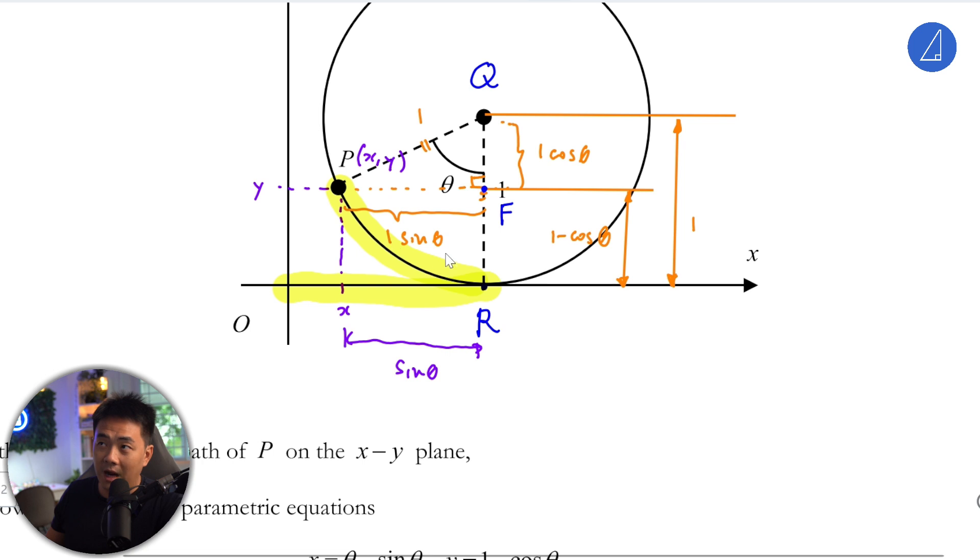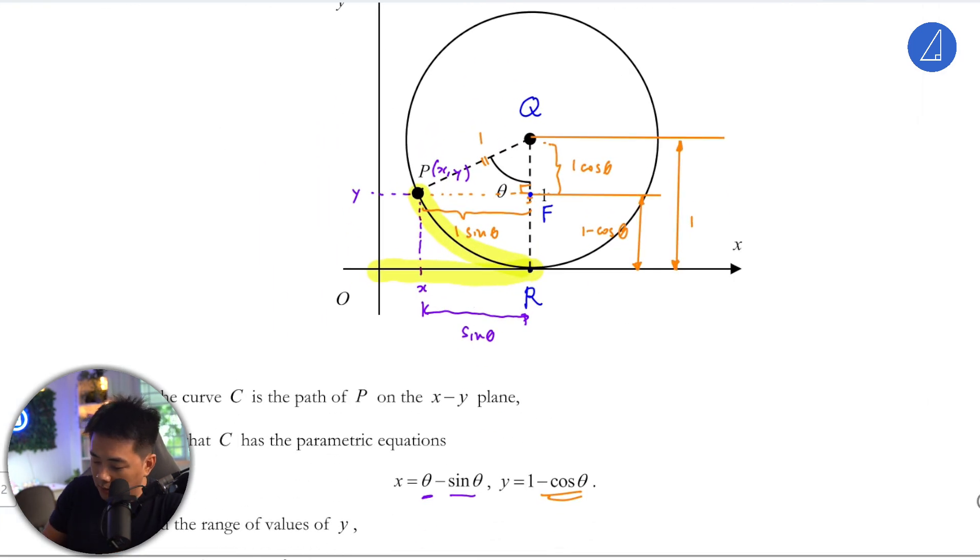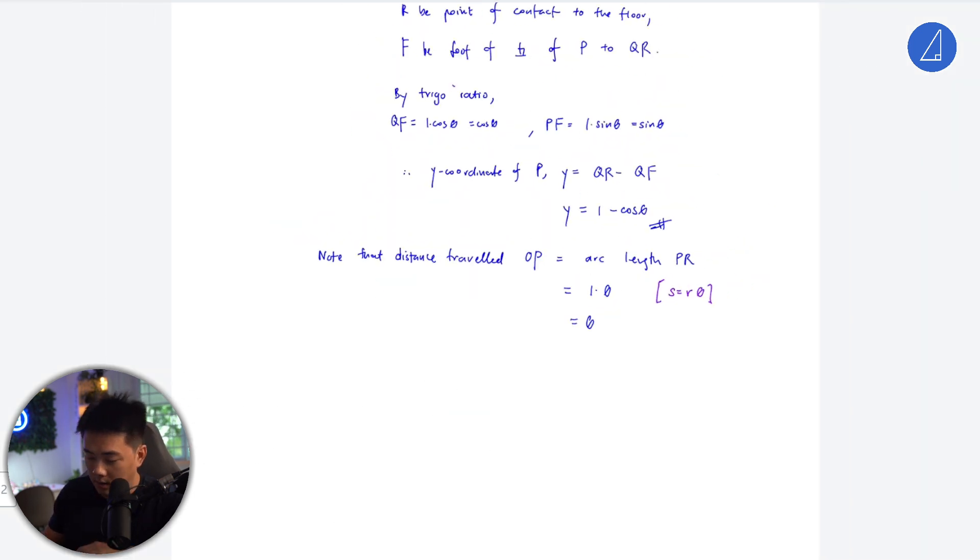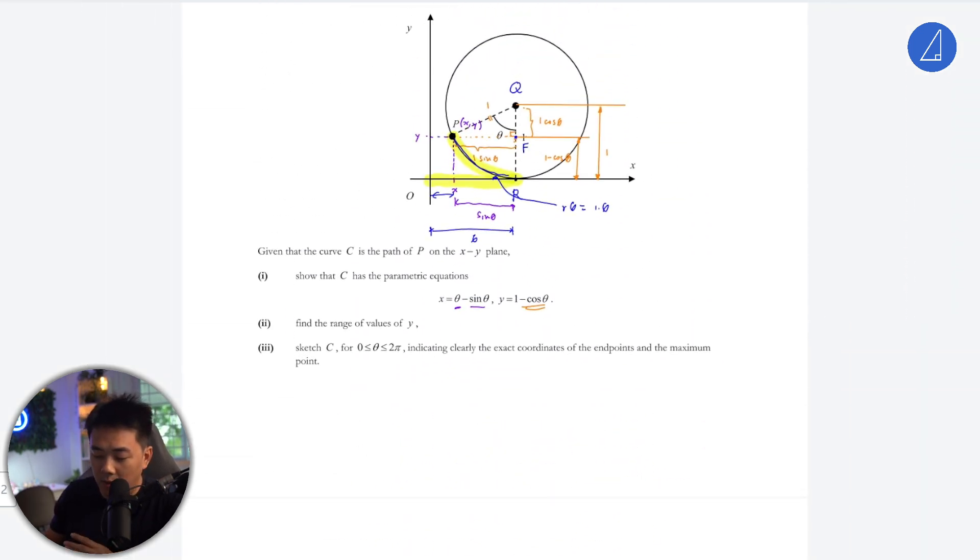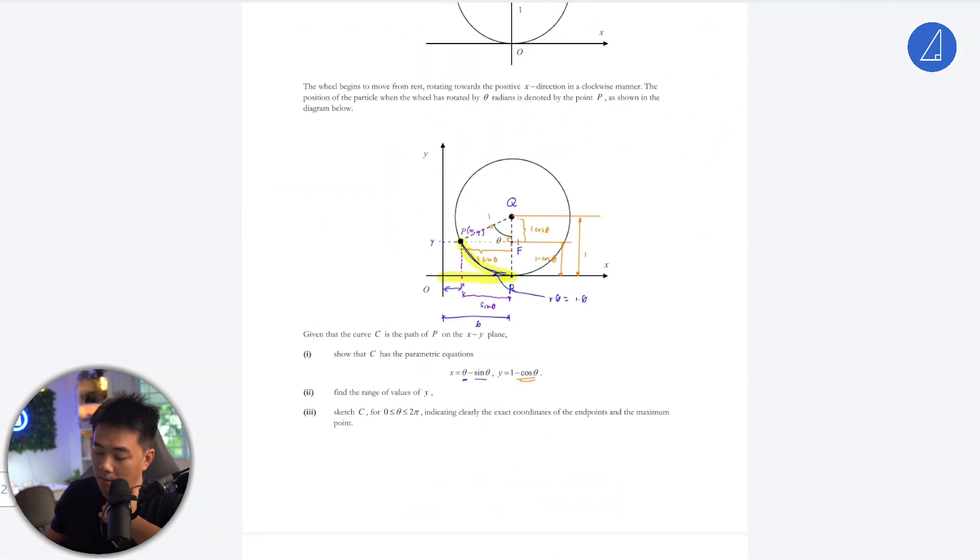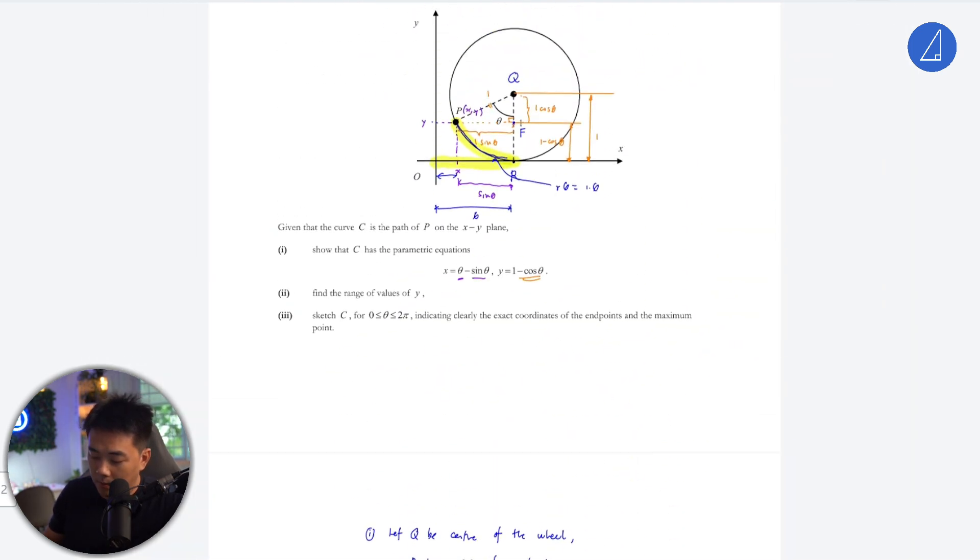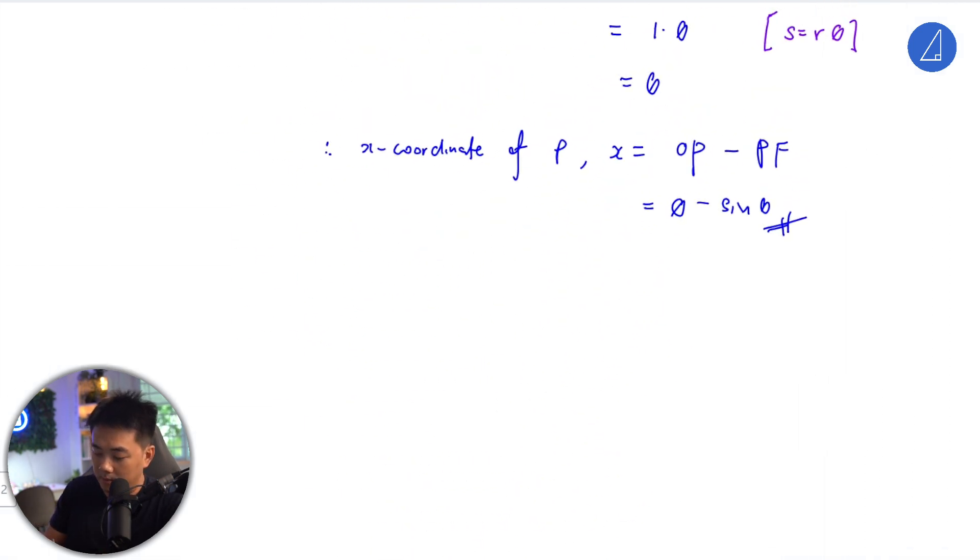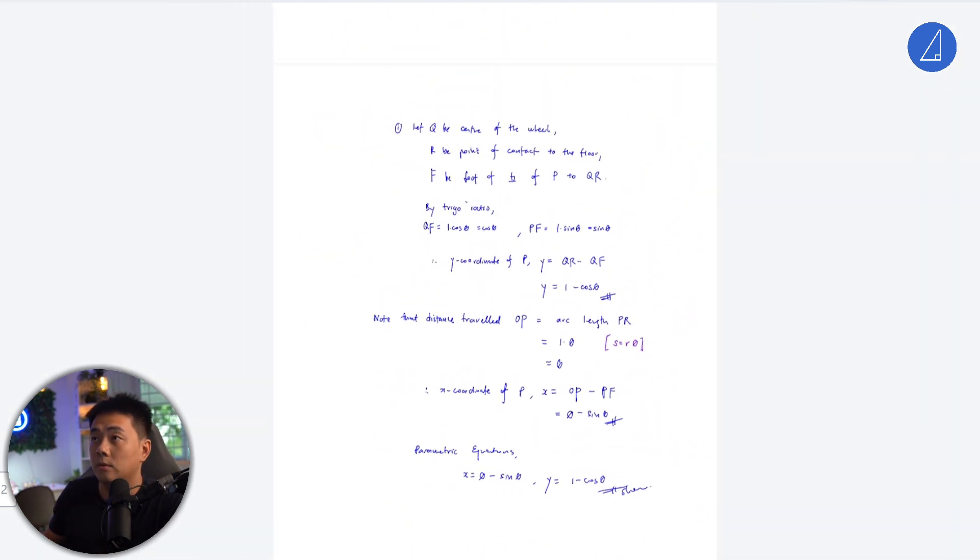So you can use arc length. You know that arc length here is r θ which is actually 1 θ. So if you want to find the coordinate of x here, this is just θ - sin θ. That's where you get the θ - sin θ from. Then we know that x coordinate of P would just be OP minus PF. So the parametric equation for x, hence shown. That's how you do the first part.